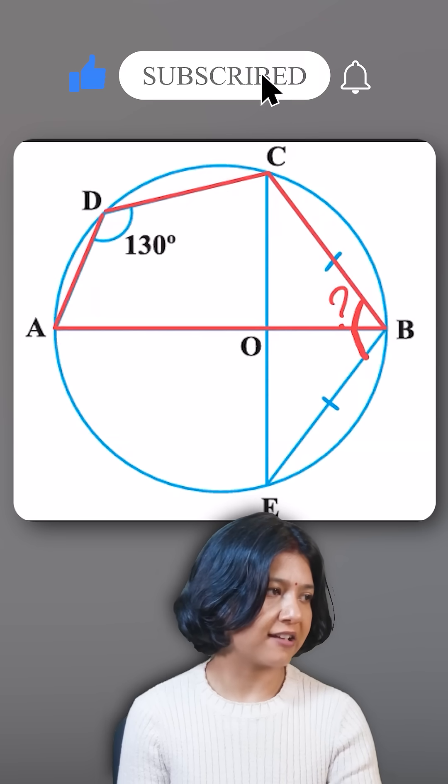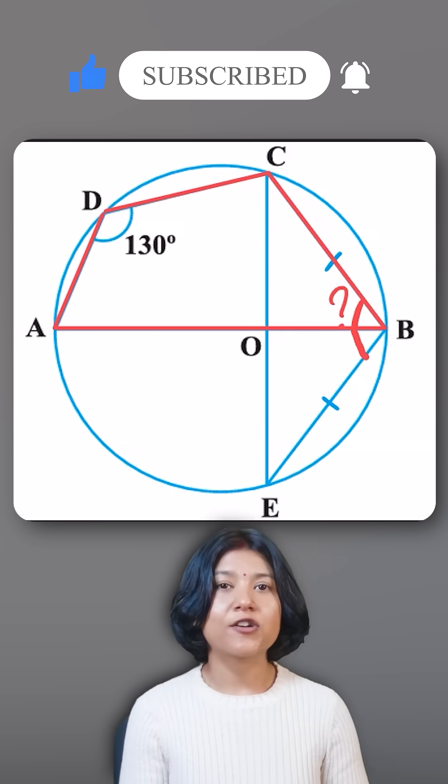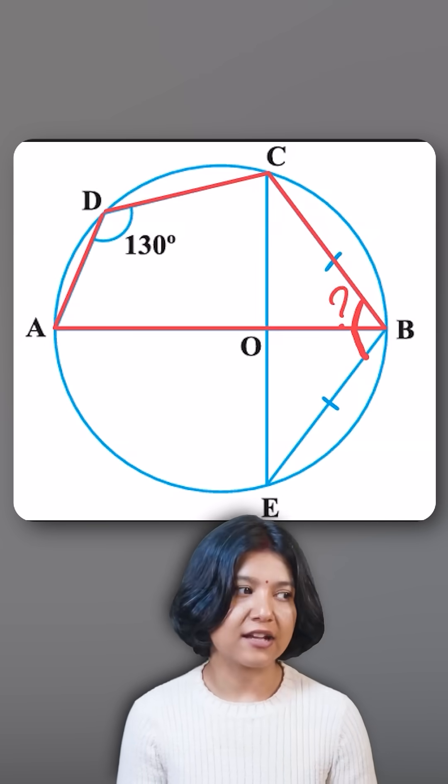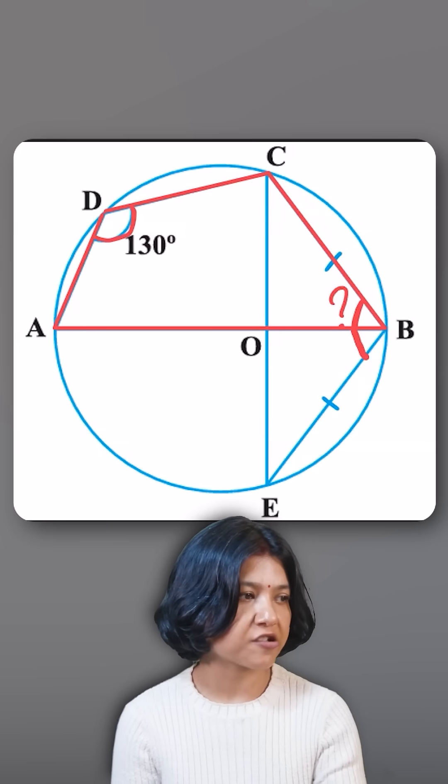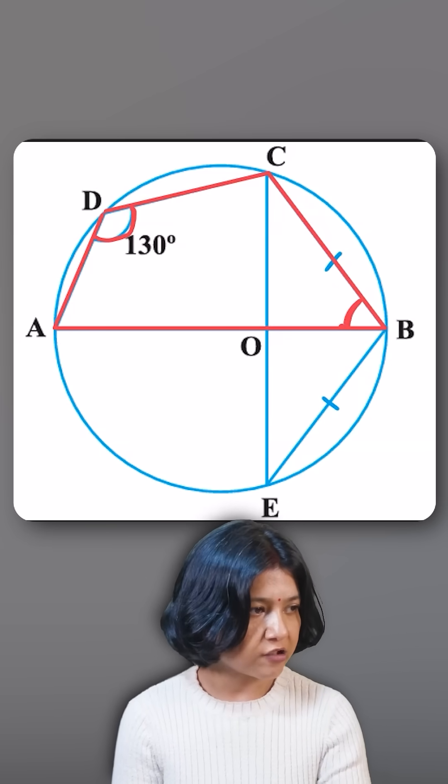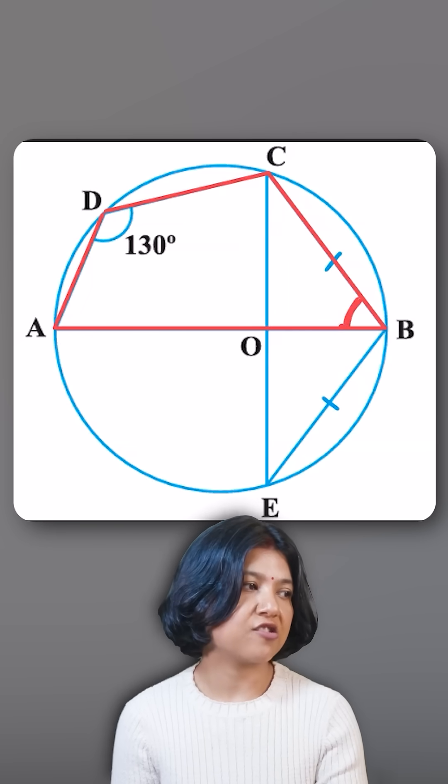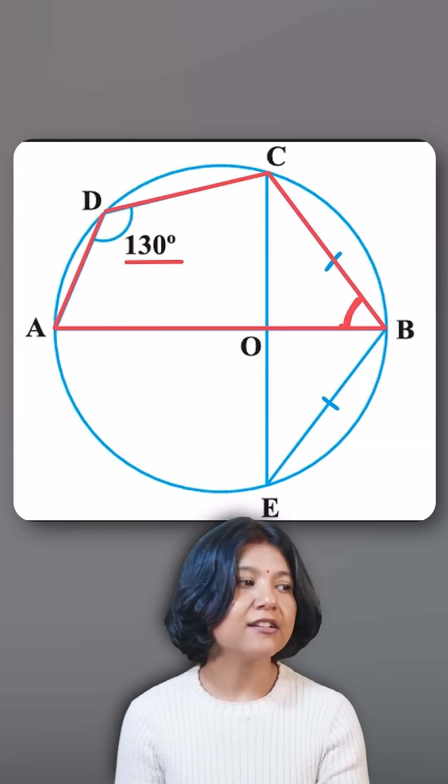In a cyclic quadrilateral, the opposite angles are supplementary. The opposite of angle D here has to be this part, so these two angles will have to be supplementary. Supplementary means just subtract this from 180, which gives you 50.